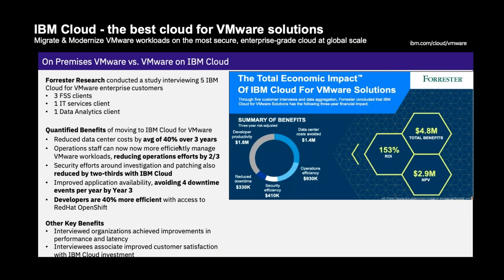If you size the cloud properly and take advantage of its ability to expand and shrink, you will come out well ahead, as illustrated by this study — 40% cost reduction. Breaking down the benefits: data center costs avoided were $1.4 million; operations efficiency was $930K; security efficiency was $410K; and reduced downtime — avoiding about four downtime events per year — contributed $330K. All combined, these clients had a 153% ROI. Additional side benefits include developers having 40% more efficiency with access to Red Hat OpenShift, which goes with the modernization of VMware workloads story.